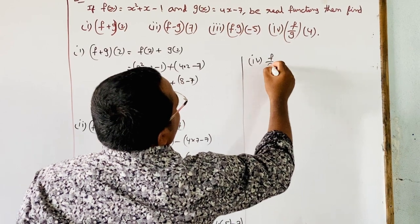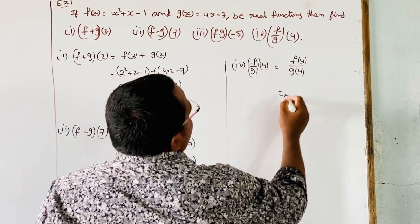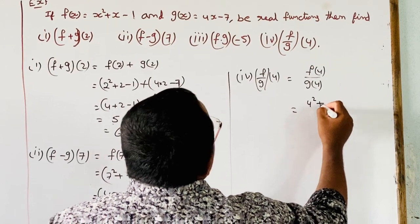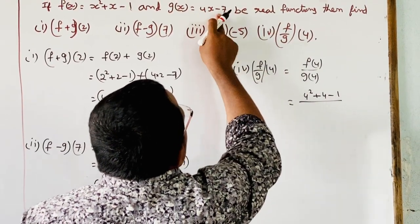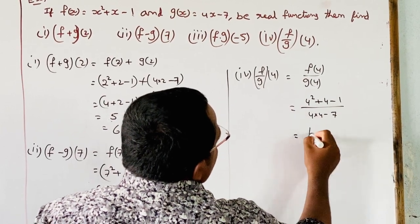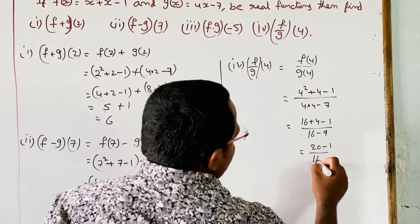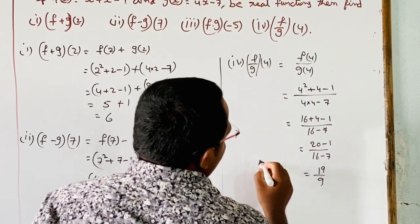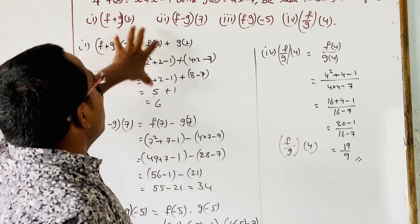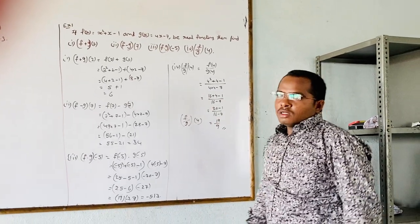Fourth, F by G of 4 equals F of 4 by G of 4. F of 4: 4 squared plus 4 minus 1 equals 16 plus 4 minus 1 equals 19. G of 4: 4 into 4 minus 7 equals 16 minus 7 equals 9. Therefore F by G of 4 equals 19 by 9. Like this, we find solutions for sum, difference, product, and quotient functions. Thank you for watching.